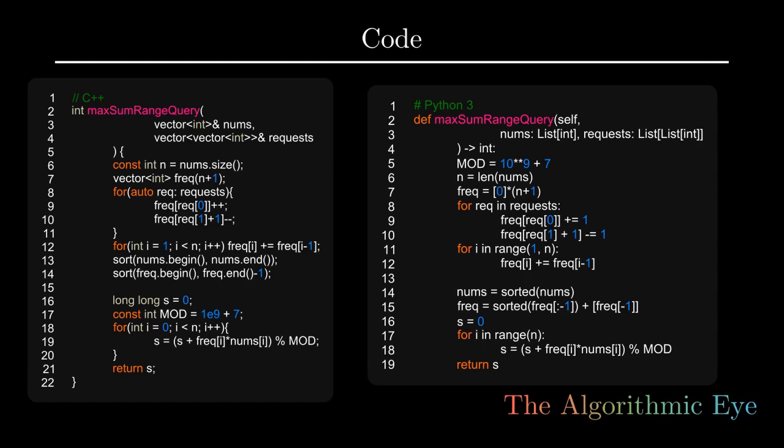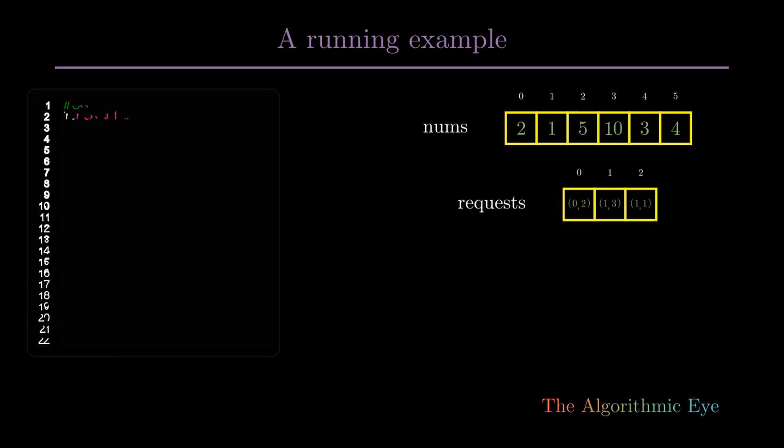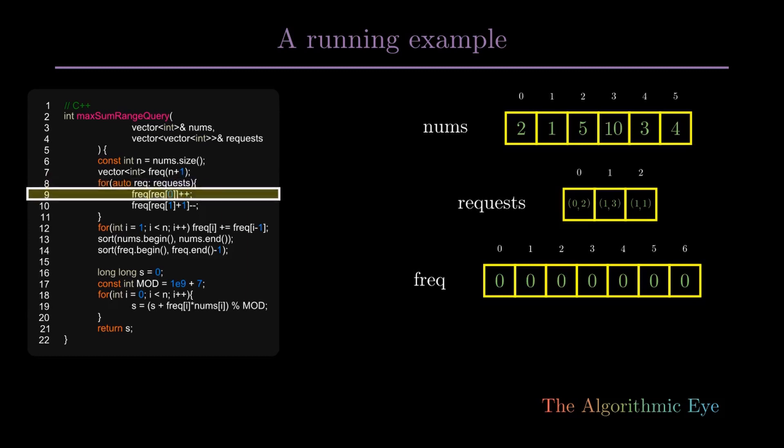Now finally, let's look at an animated running example of our code in action. Here we have our arrays: nums, requests, and frequency. We iterate through requests and build our frequency array, and then finally we take the prefix sum of our frequency array.